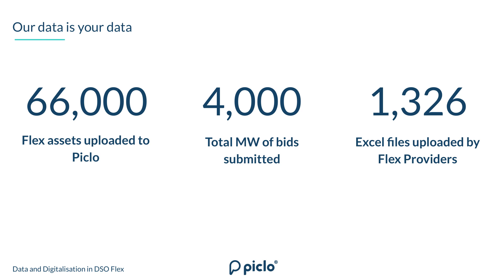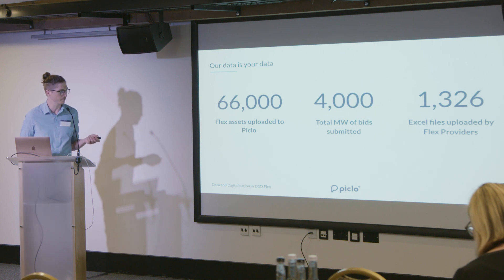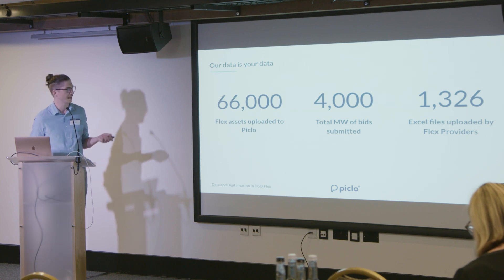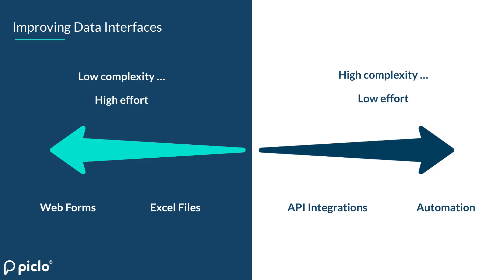Just some figures that are true as of last week: we've had over 66,000 individual assets uploaded to Piclo — not all of them real or still active — but just to give you an idea of scale. There's been four gigawatts of total bids submitted. And the last figure is 101,326 Excel files uploaded, which a lot of you are probably quite familiar with — maybe not for good reasons.